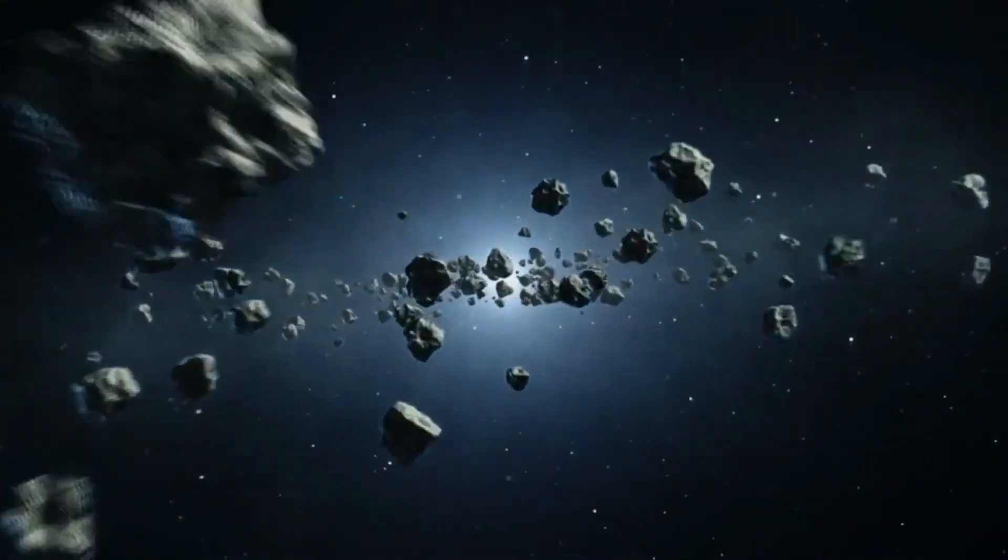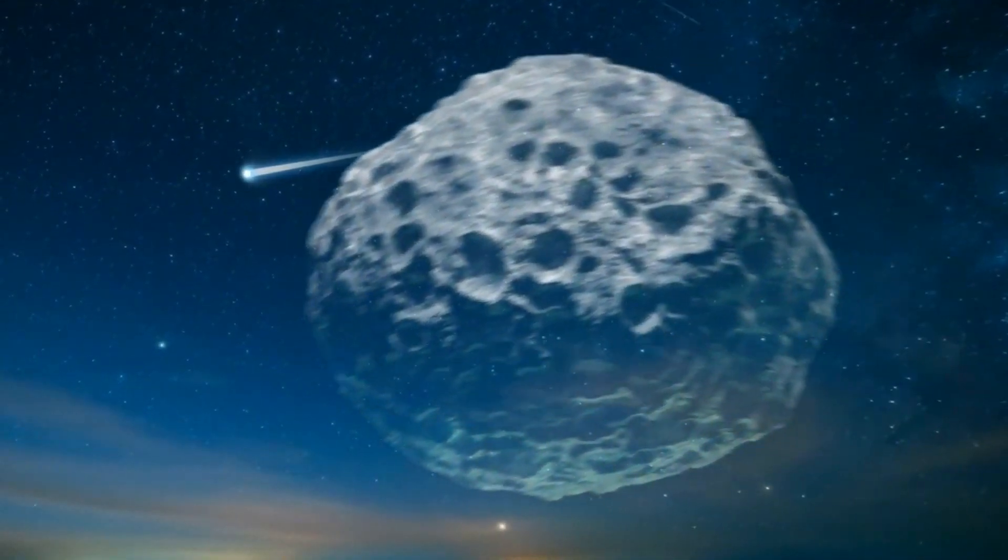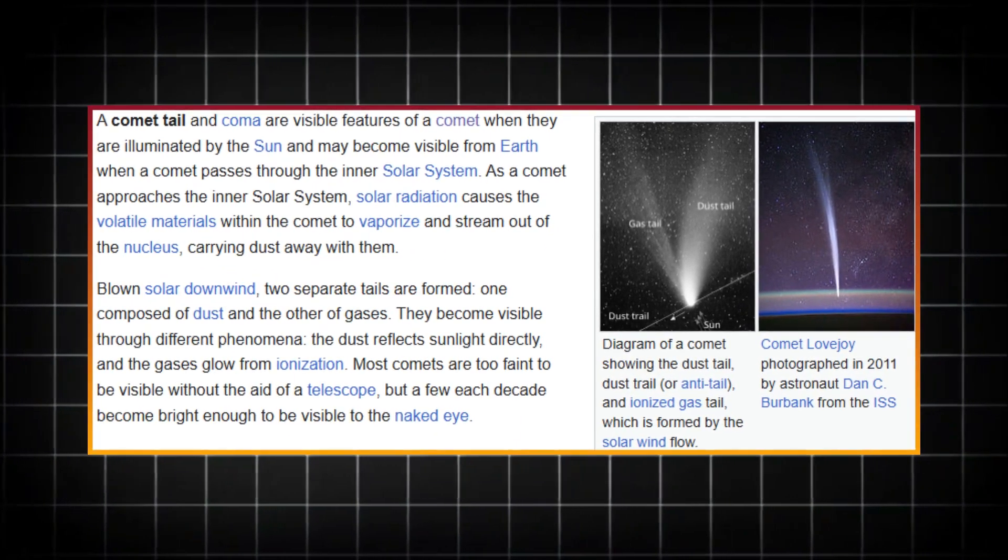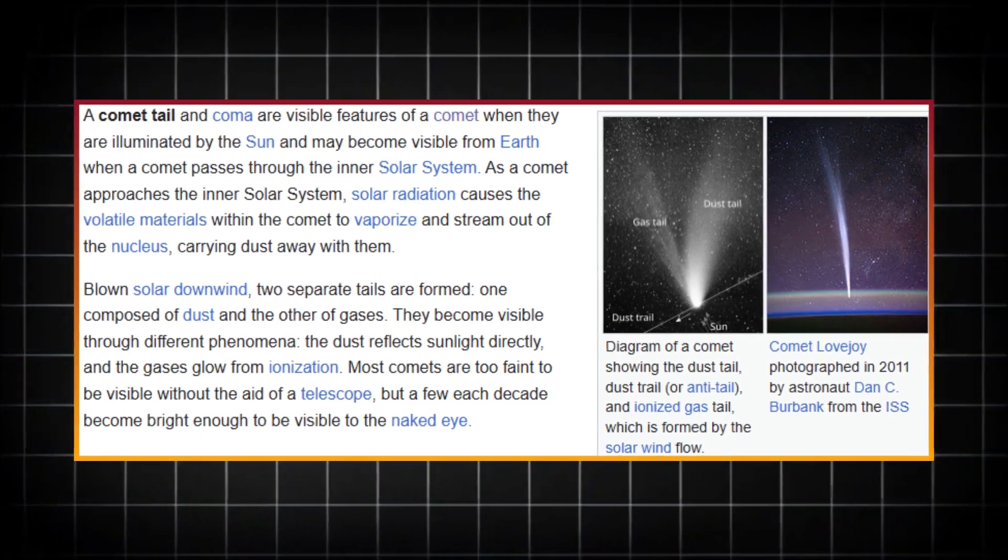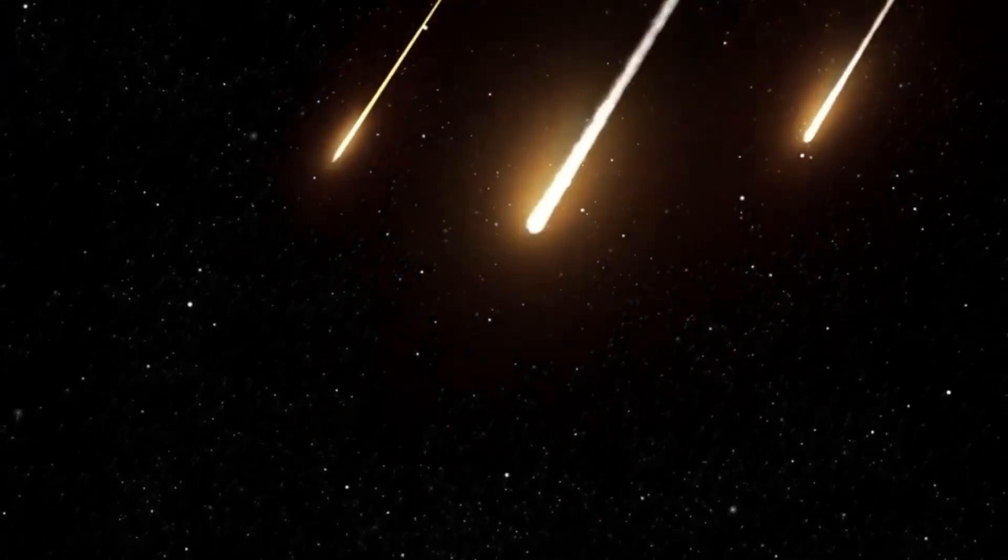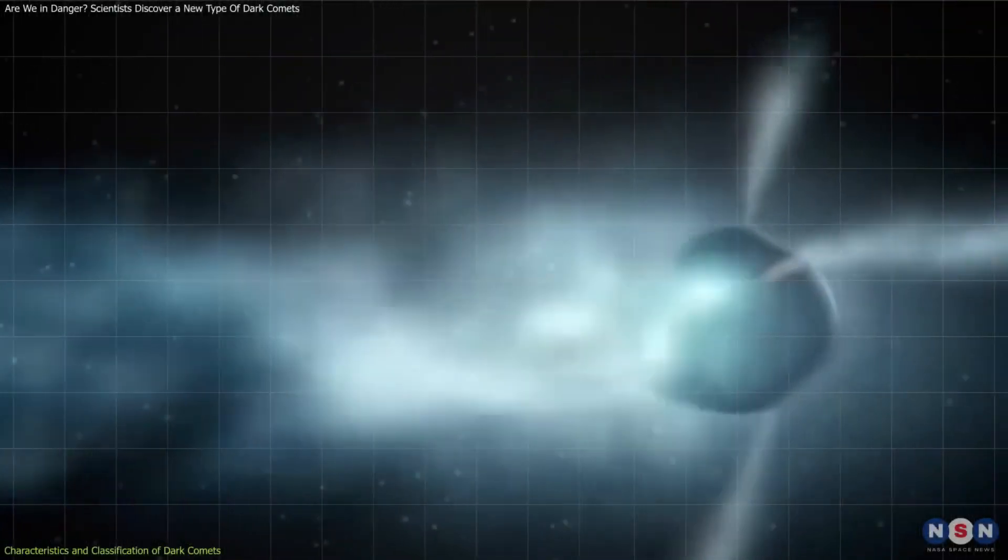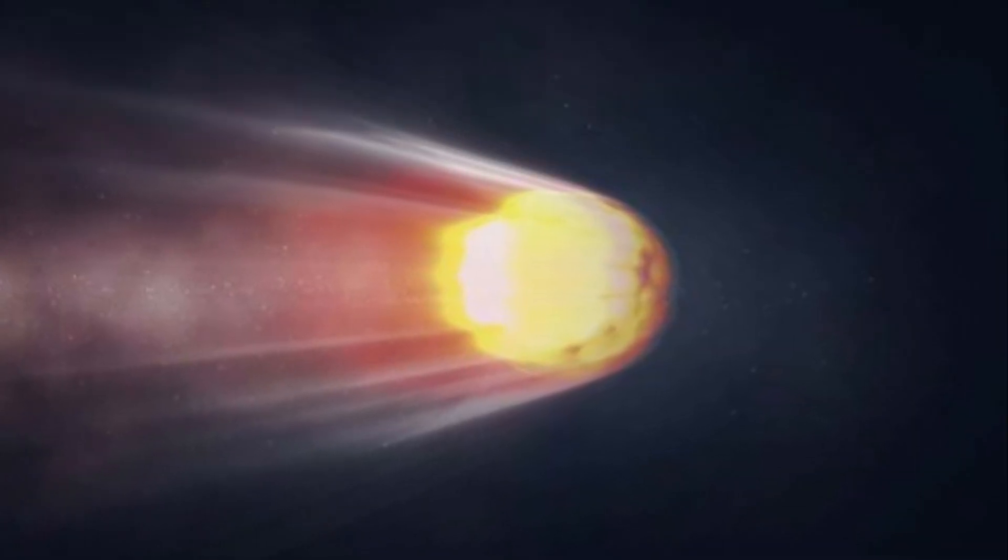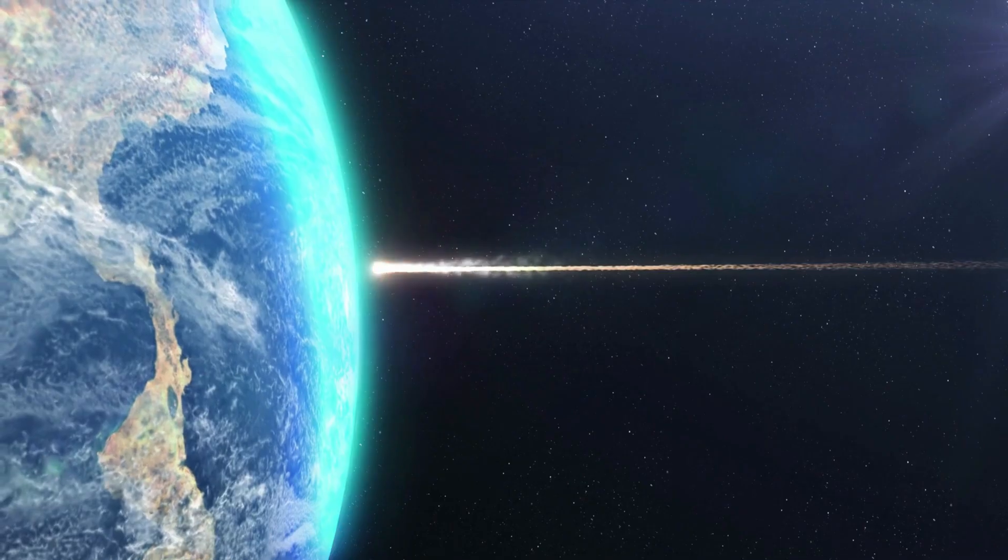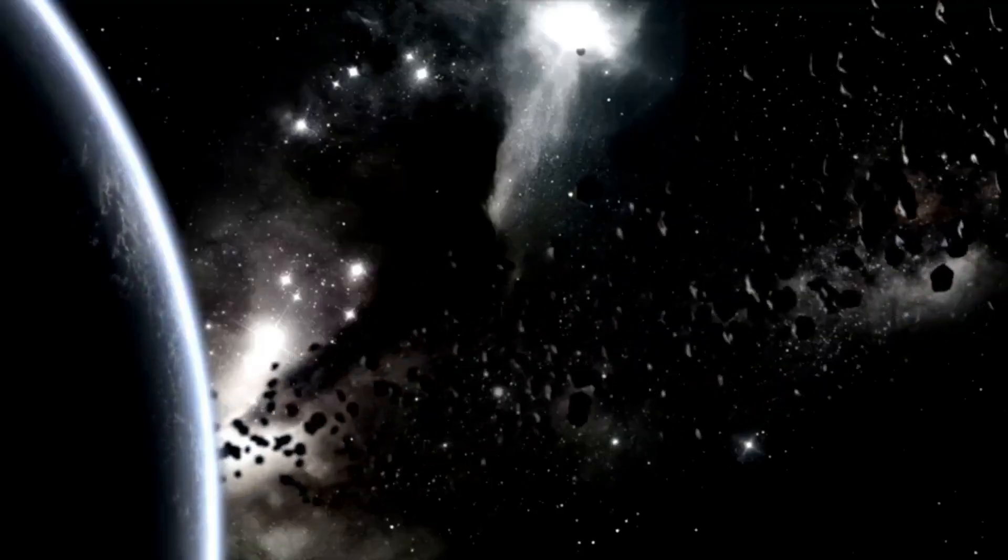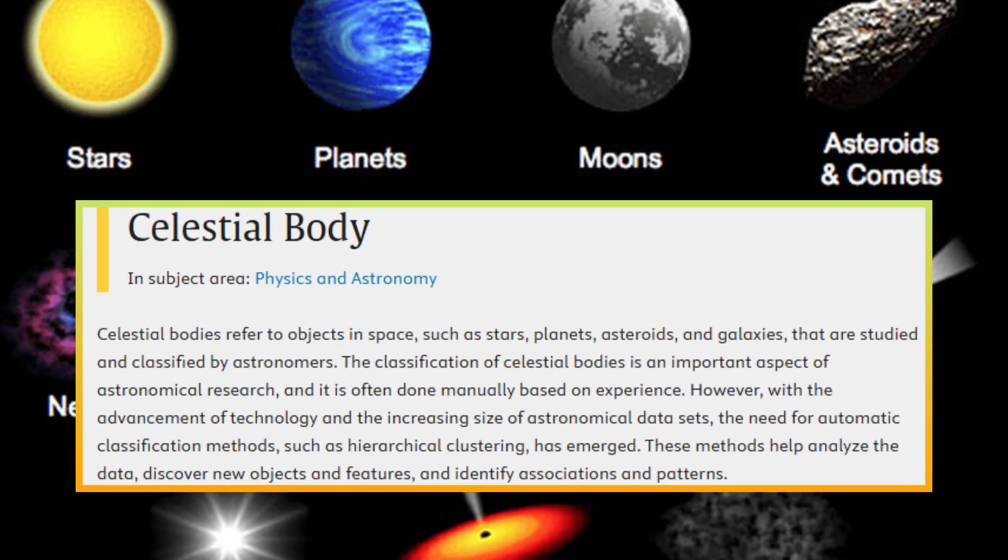On the other hand, the smaller, inner dark comets have orbits that bring them closer to Earth. These objects are more likely to interact with Earth or other planets, potentially posing a risk to our planet. Their behavior, especially their unpredictable acceleration, makes them harder to track, which is why studying them is crucial for planetary defense.